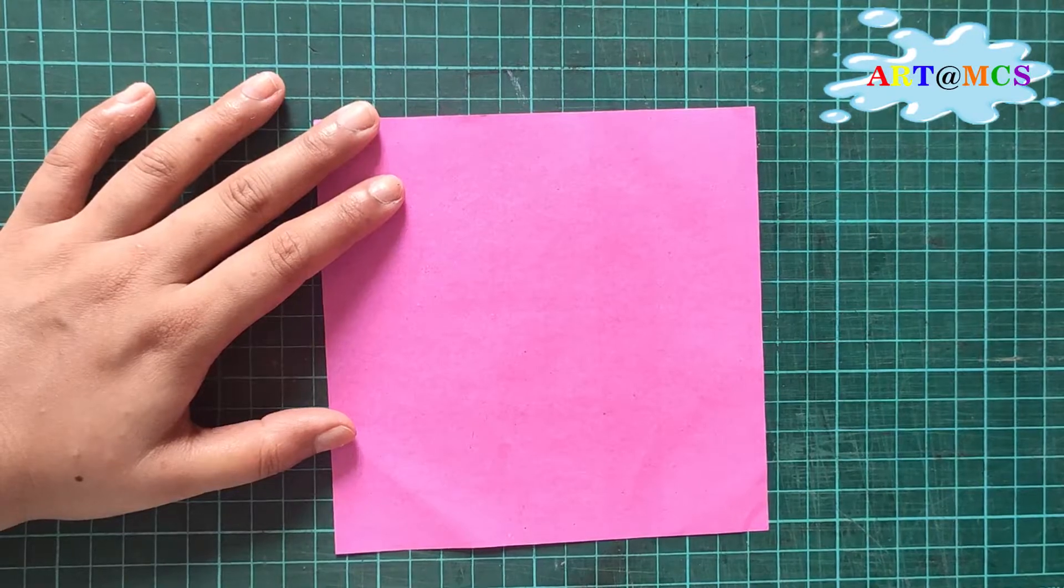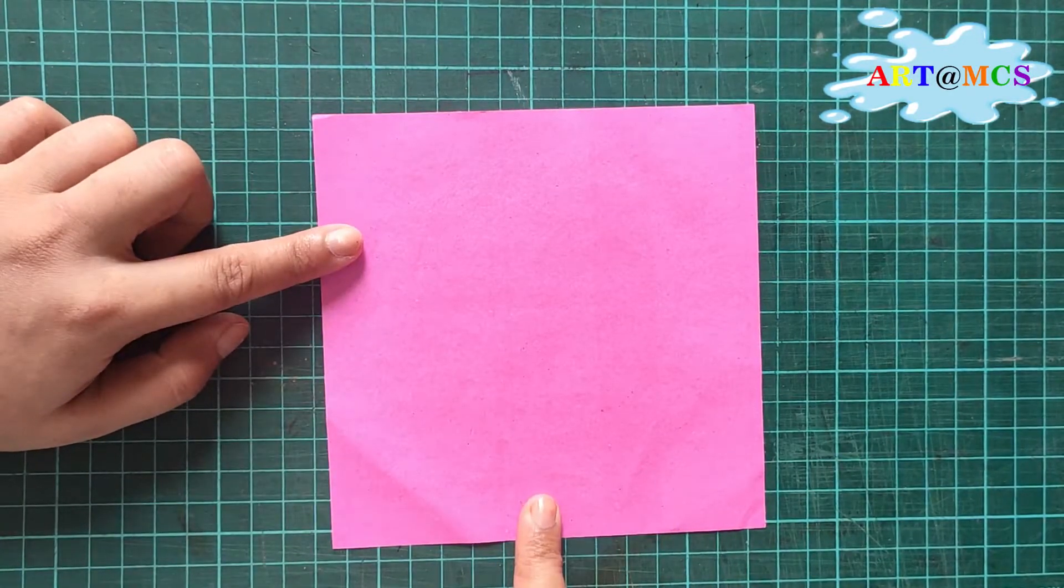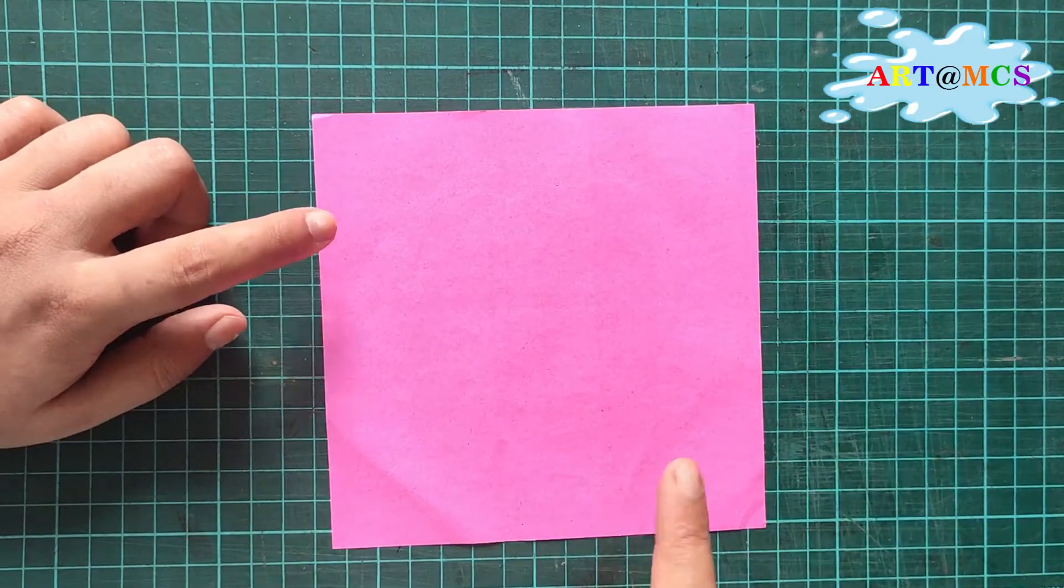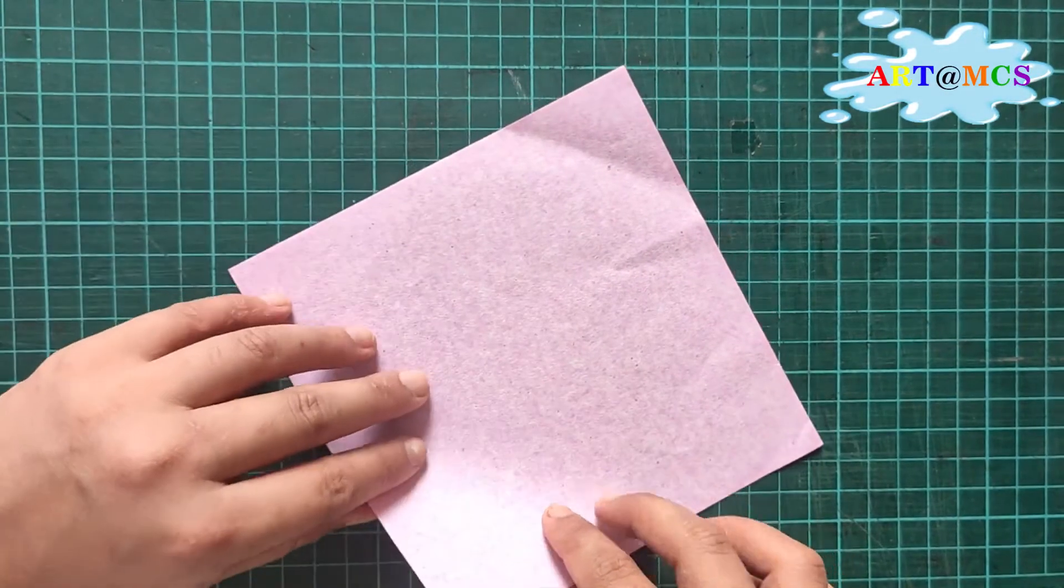Hello everyone, today we are going to make a flower by paper folding, a technique known as origami. Start by taking an origami sheet—you can use any square sheet available at home. Flip it and put the white side up, which means the color side is at the bottom.